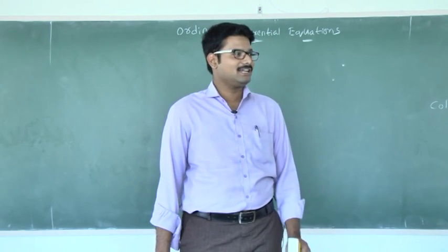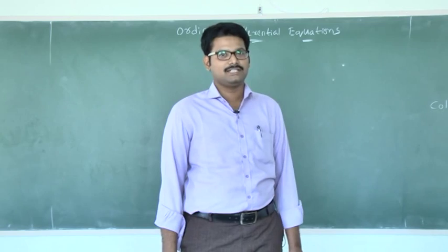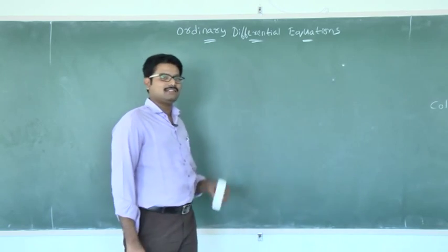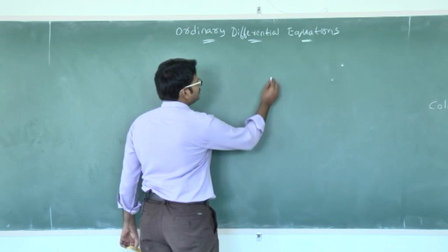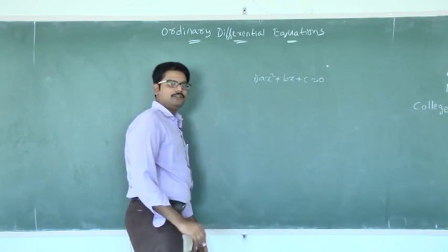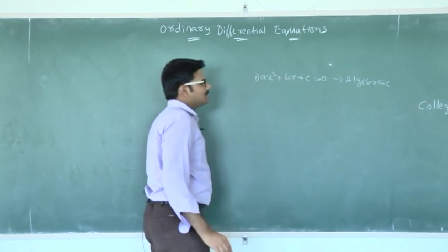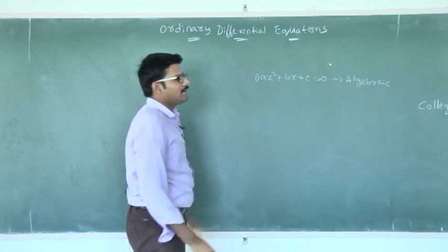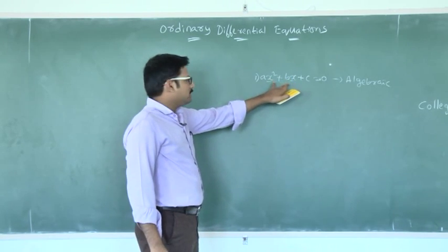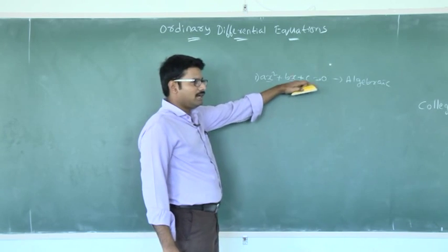Before going to this, first let us recall what is a differential equation, its definition, and what are the types of differential equation. In our previous sessions or earlier classes, we are already aware of an equation. For example, if you take Ax² + Bx + C = 0, we know that it is an algebraic equation. Why? Because it is having algebraic terms x, y, z and so on. If x, y, z variables are there in the given equation, then that equation is known as an algebraic equation.